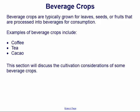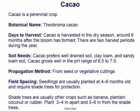Cacao is a perennial crop with the botanical name Theobroma cacao. Cacao is harvested in the dry season, around six months after the bloom has formed, with two harvest periods during the year. Cacao prefers well-drained soil — clay loam and sandy loam — and grows well in a pH range of 6.5 to 7.0.